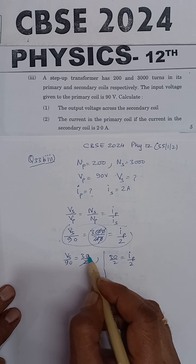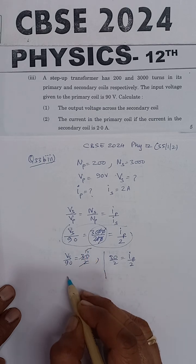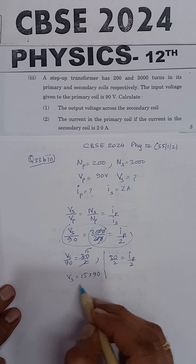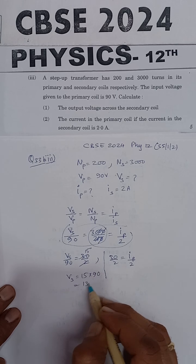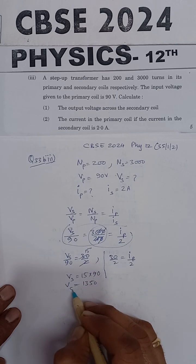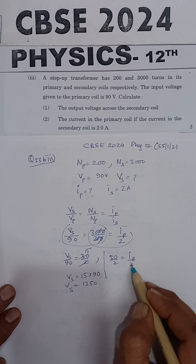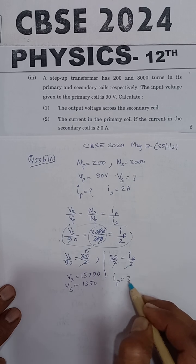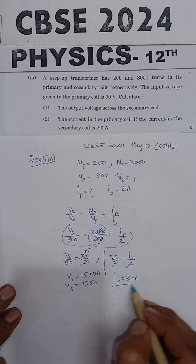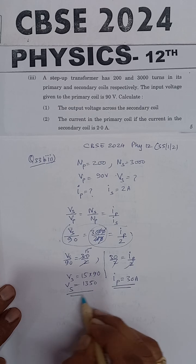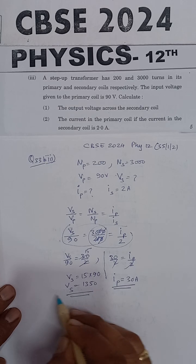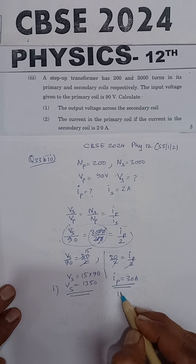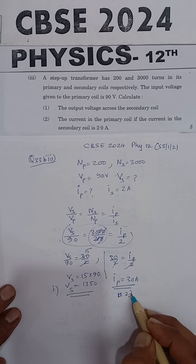From the simplification, Ip divided by 2 equals 15, so Ip is 30 amperes. And Vs is 1350 volts. This is the answer to the first part, the second part, and the third part respectively.